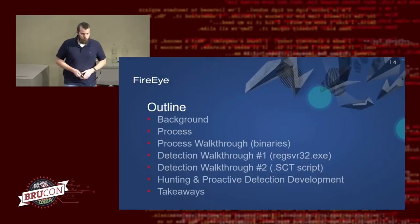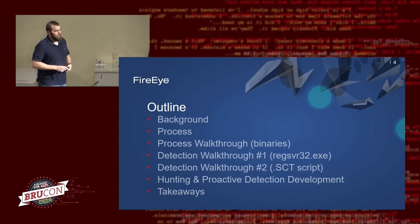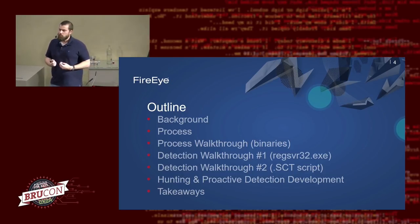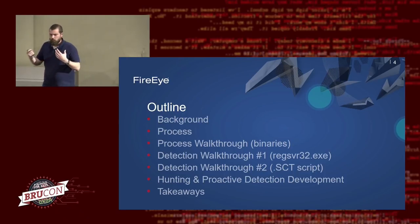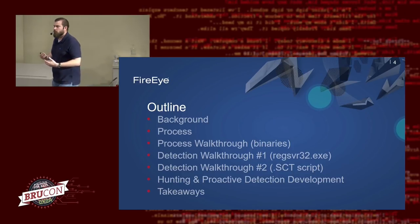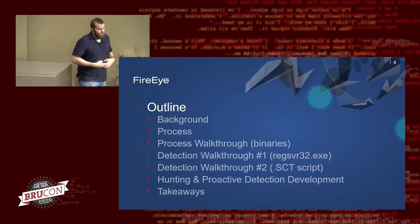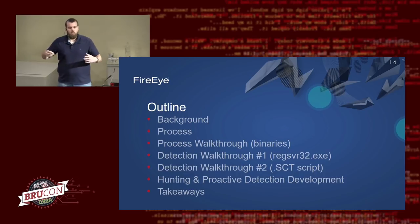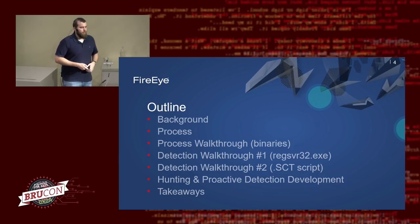A brief outline: we'll cover a quick background of the methodology, the high-level process of detection development and testing, then walk through case studies for binary-related malware and living-off-the-land techniques like regsvr32 and SCT scripts. Along the way we'll look at breaking bad assumptions, handling obfuscation and evasion, and how we factor those into detection development. We'll end by looking holistically at where we get detection ideas, how we iterate as a team, and finish with takeaways and Q&A.